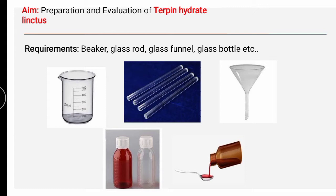The active agent here is terpene hydrate. Terpene hydrate generally exists in combination with codeine, which is an expectorant drug. Terpene hydrate also belongs to the same category — it is expectorant in nature, and on the virtue of this property it is used to loosen the mucus. Its uses include treatment of chronic bronchitis, pneumonia, bronchiectasis, and COPD.